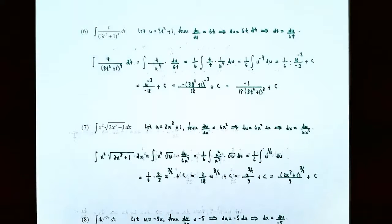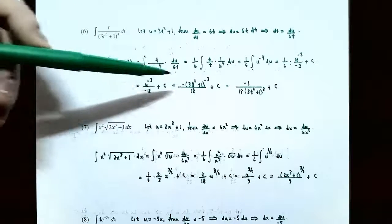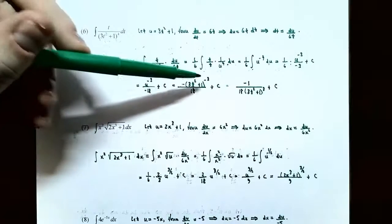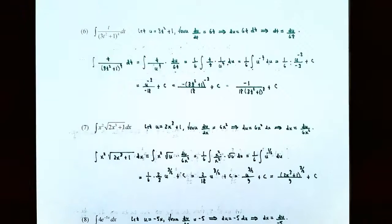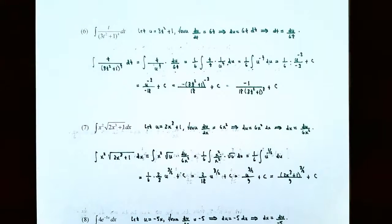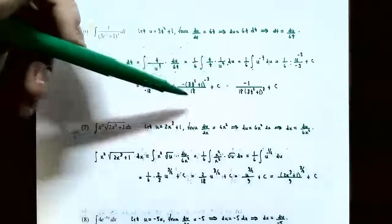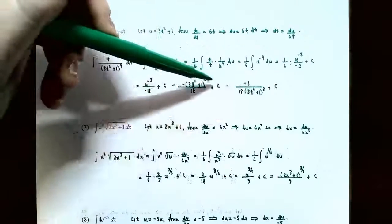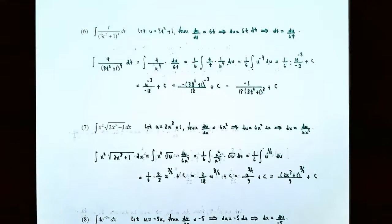The last step is to replace u with the inside function 3t² + 1. You have negative (3t² + 1)^(−3) / 18 plus C. Since the original had a positive exponent, move (3t² + 1) to the denominator: the answer is −1 / (18(3t² + 1)^3) plus C.